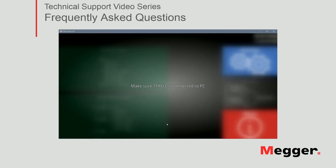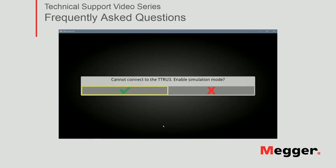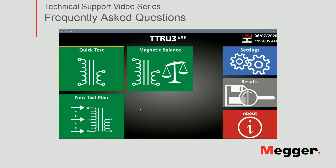When you first launch the software on your computer, it will try to connect to an instrument. Once it determines that no instrument is connected, it will offer you to enable simulation mode. Click accept on the prompt, and you'll see on the upper right corner that simulation mode is now enabled.